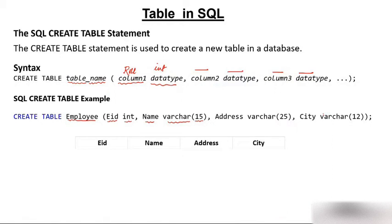On writing this statement, the structure of the table will come like this: the first column is employee ID, the second column is name, the third column is address, and the fourth column is city.